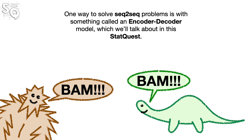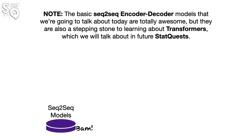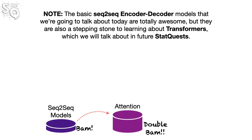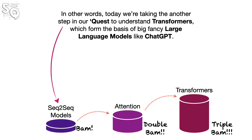One way to solve seq-to-seq problems is with something called an encoder-decoder model, which we'll talk about in this StatQuest. Note: the basic seq-to-seq encoder-decoder models we're going to talk about today are totally awesome, but they are also a stepping stone to learning about Transformers, which we'll talk about in future StatQuests. In other words, today we're taking another step in our quest to understand Transformers.